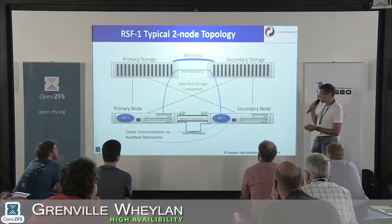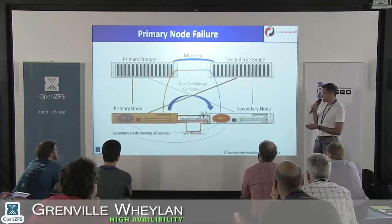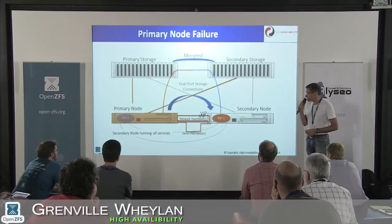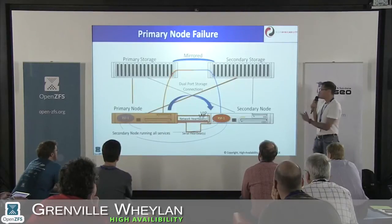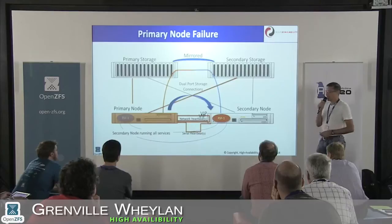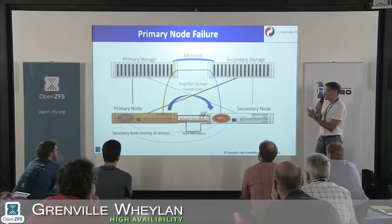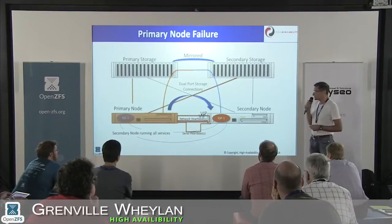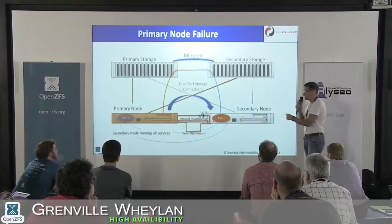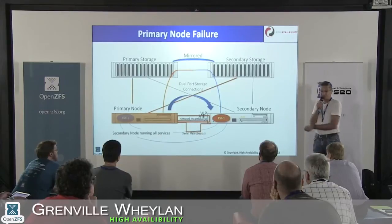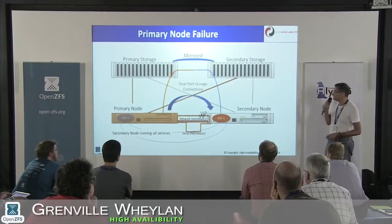In the event of a system failure — say the primary node on the left fails — the system on the right detects all heartbeats have gone and starts the service that was running on the primary node. Now we've got two VIPs representing both services running on node B.